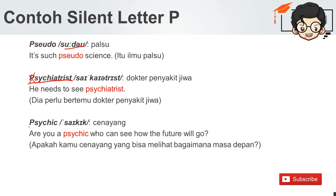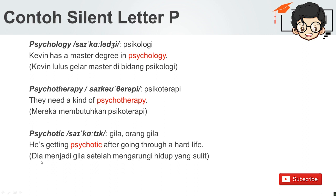Atau contoh yang lain ada di kata 'psychic' — cenayang. Are you a psychic who can see how the future will go? Apakah kamu cenayang yang bisa melihat bagaimana masa depan? Kemudian 'psychology' — psikologi. Kevin has a master degree in psychology. Kevin lulus gelar master di bidang psikologi.